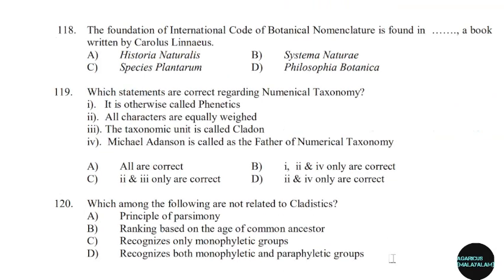118th question: The foundation of the International Code of Botanical Nomenclature is found in a book written by Carl Linnaeus. Correct answer: Option D — Philosophia Botanica.